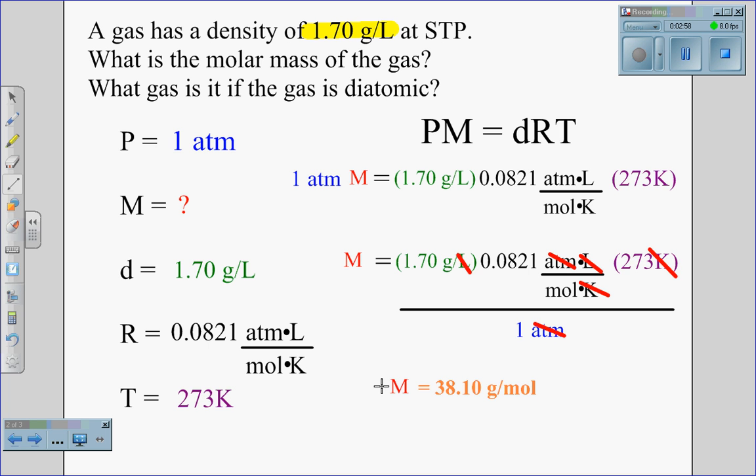In this case, the calculation comes out to be a molar mass of 38.10 grams per mole. That answers the first half of the problem, what is the molar mass of the gas.